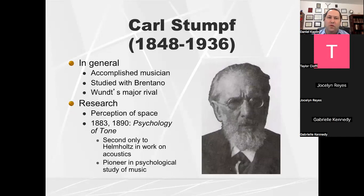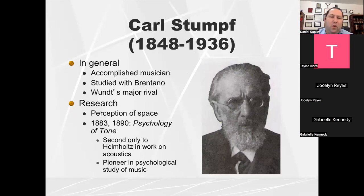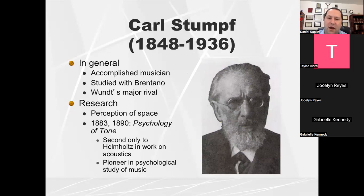One of Brentano's students was Carl Stumpf. Stumpf was a musician. He studied under Brentano and became the major rival of Wundt. There was an antagonistic relationship between them.